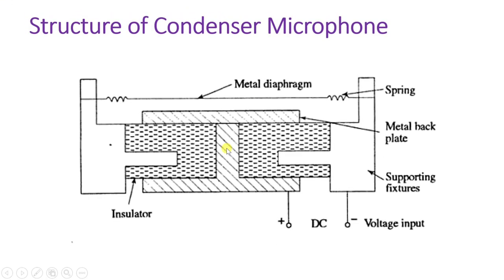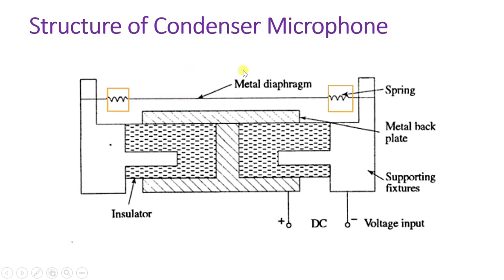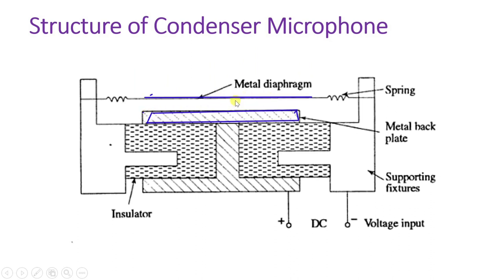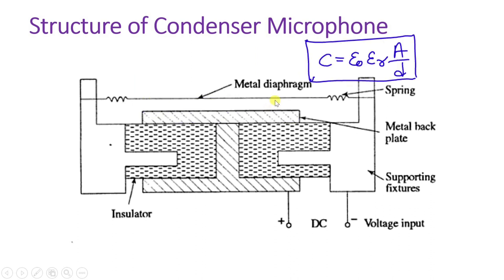Now let us see the structure of the condenser microphone. There is a diaphragm connected with a spring. Whenever sound pressure arrives, the sound wave applies pressure on the diaphragm, causing it to move. There is another metal back plate, and you can observe the distance between the diaphragm and the metal plate. As the diaphragm moves, this distance D changes. As per the capacitance formula C = ε₀εᵣA/D, a change in D will change the capacitance.